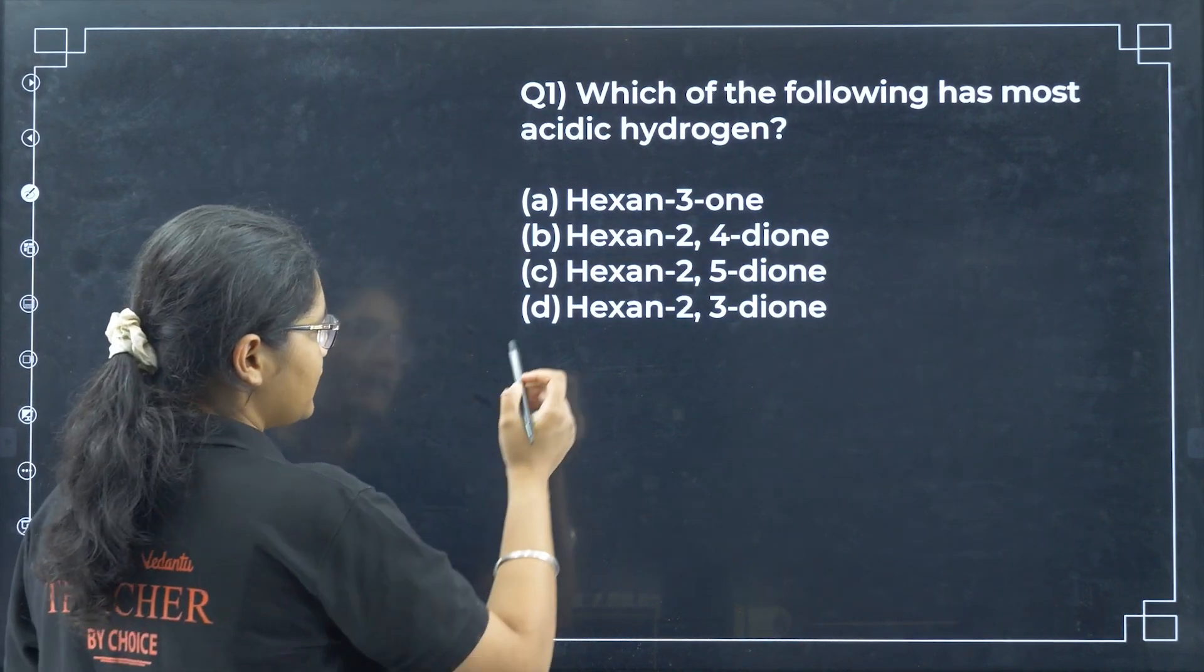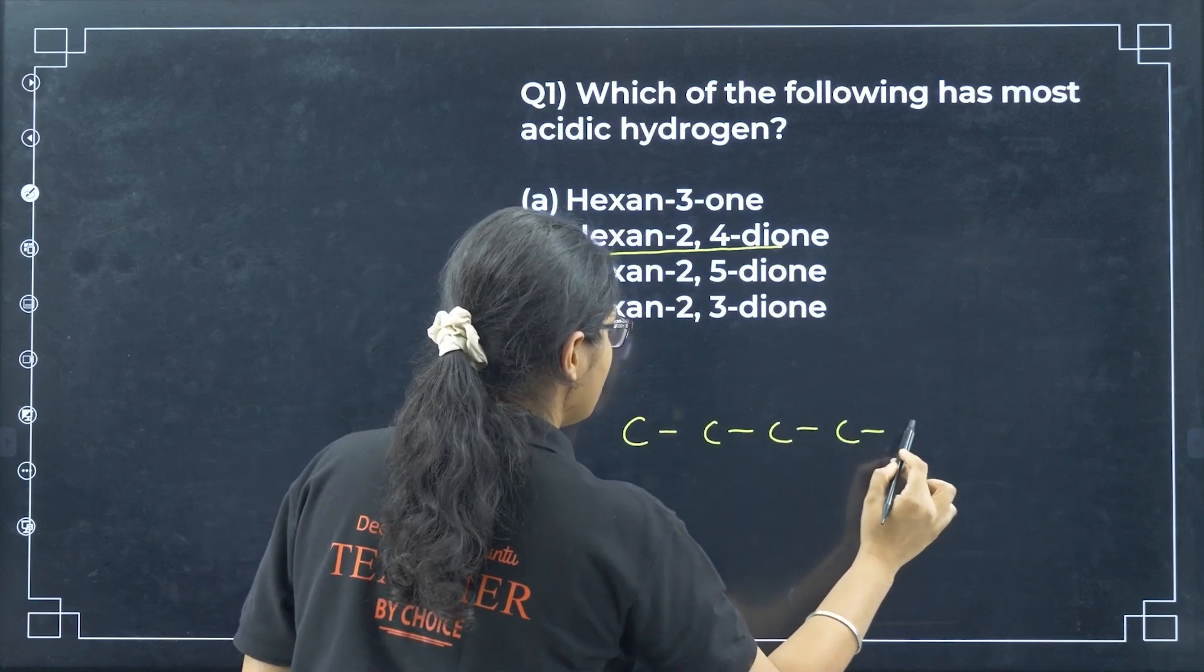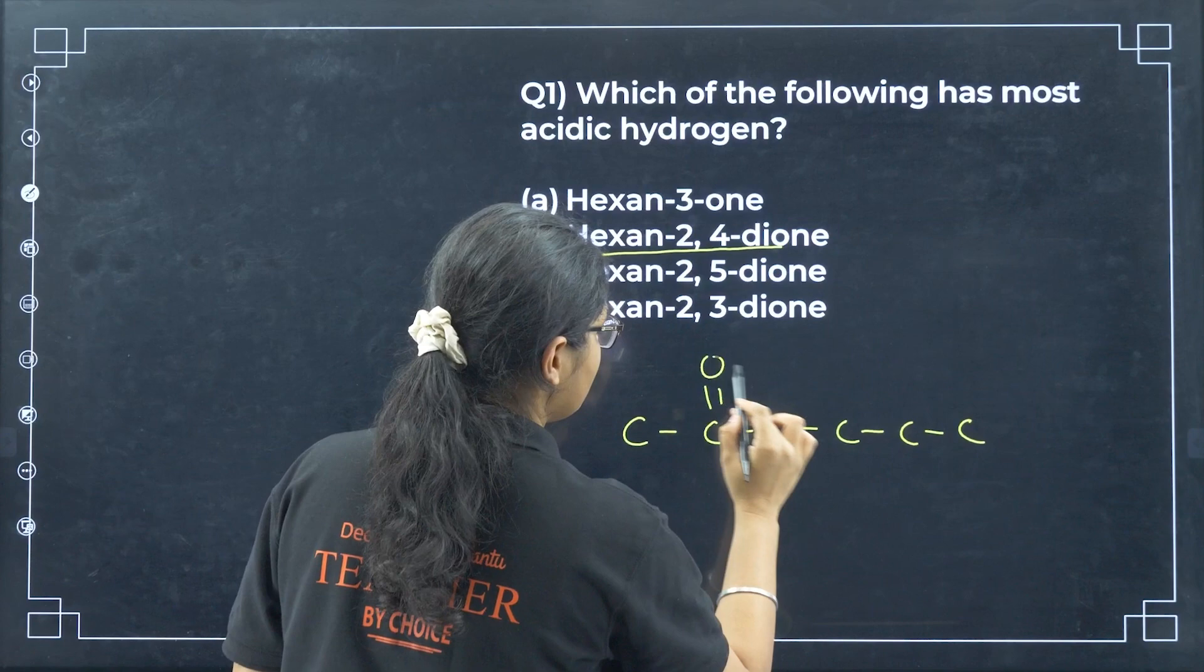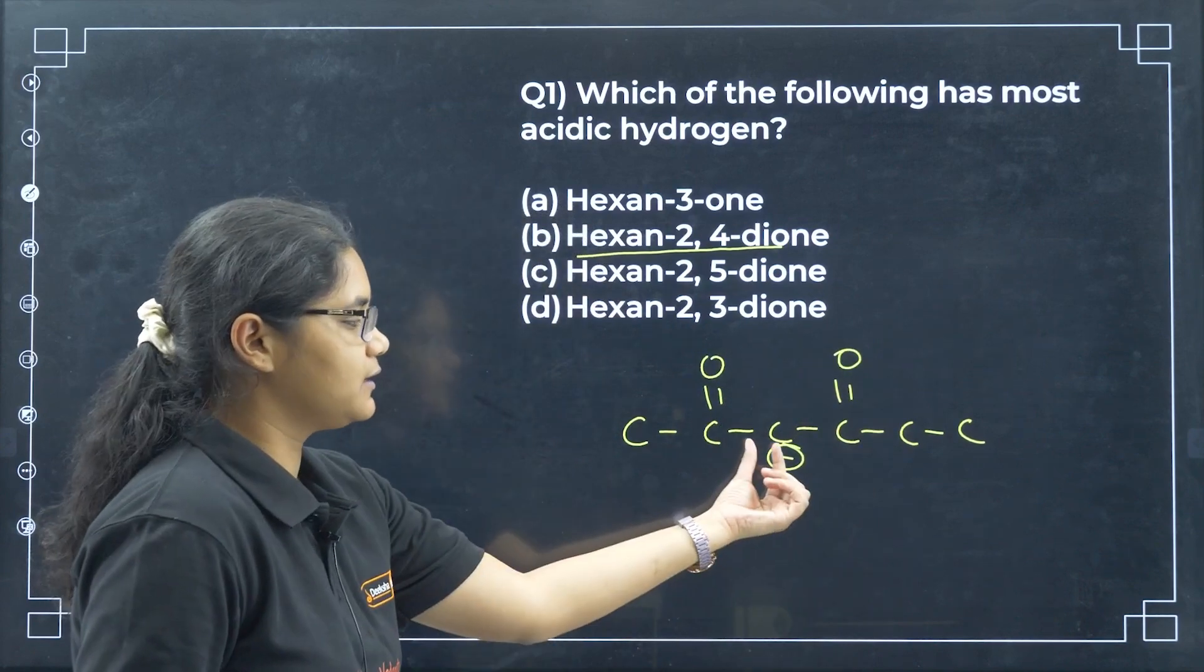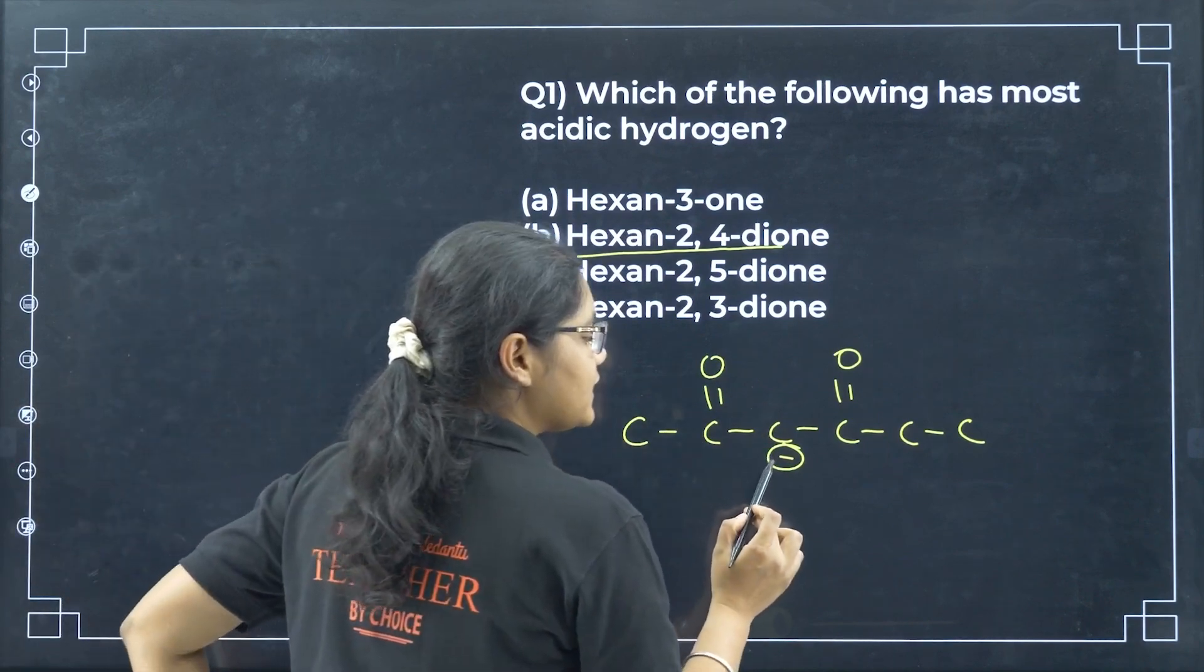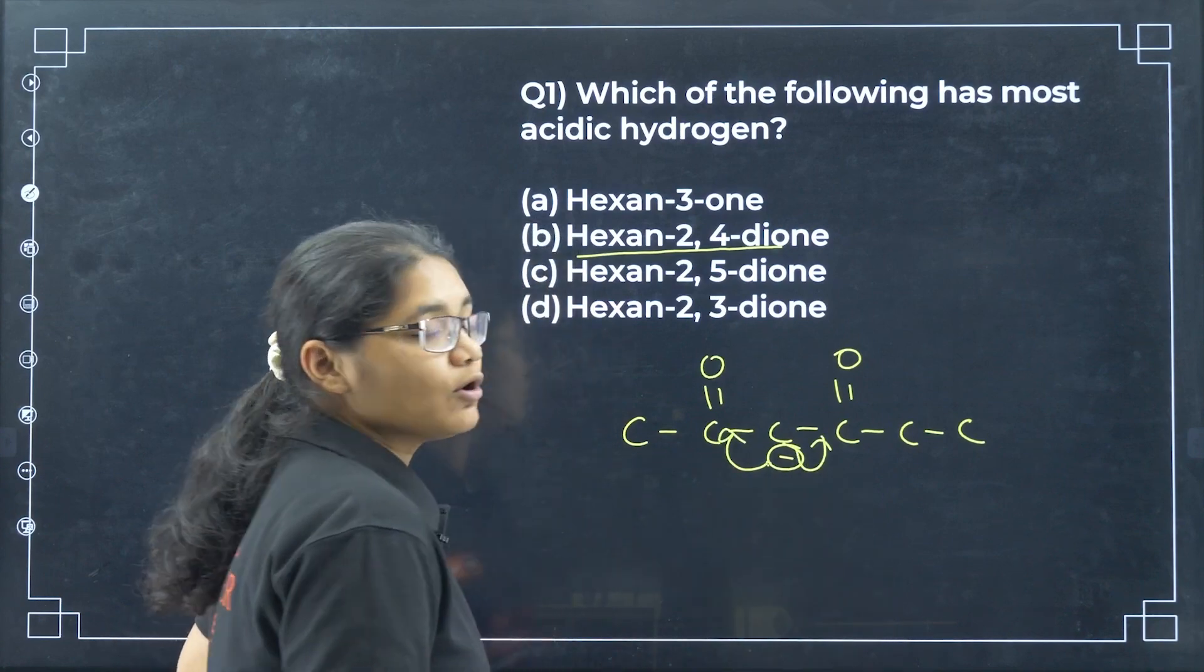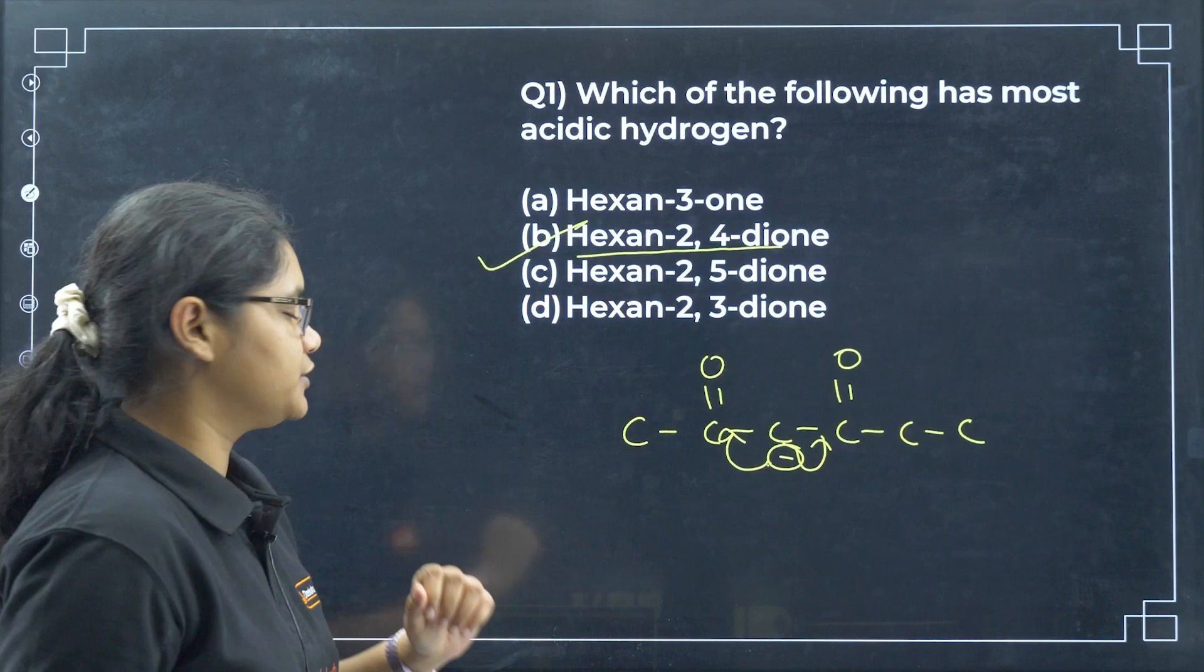Which of the following has the most acidic hydrogen? If you see, I draw the structure of hexane-2,4-dione. So we have 1, 2, 3, 4, 5, 6. If I remove this hydrogen here I will get a negative charge, and this negative charge is highly stable because it can undergo resonance on both sides. That is why this is the most acidic, option B.